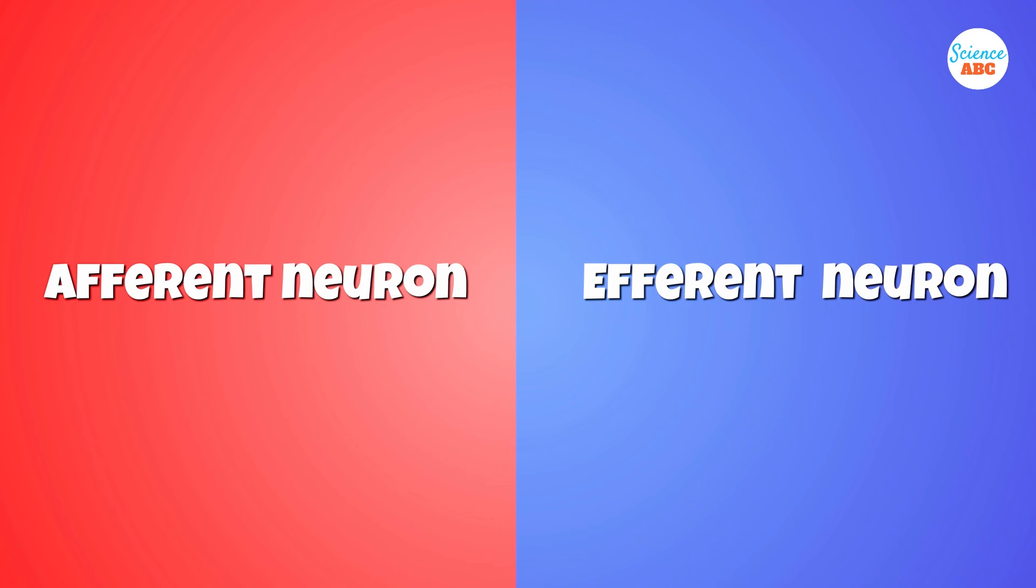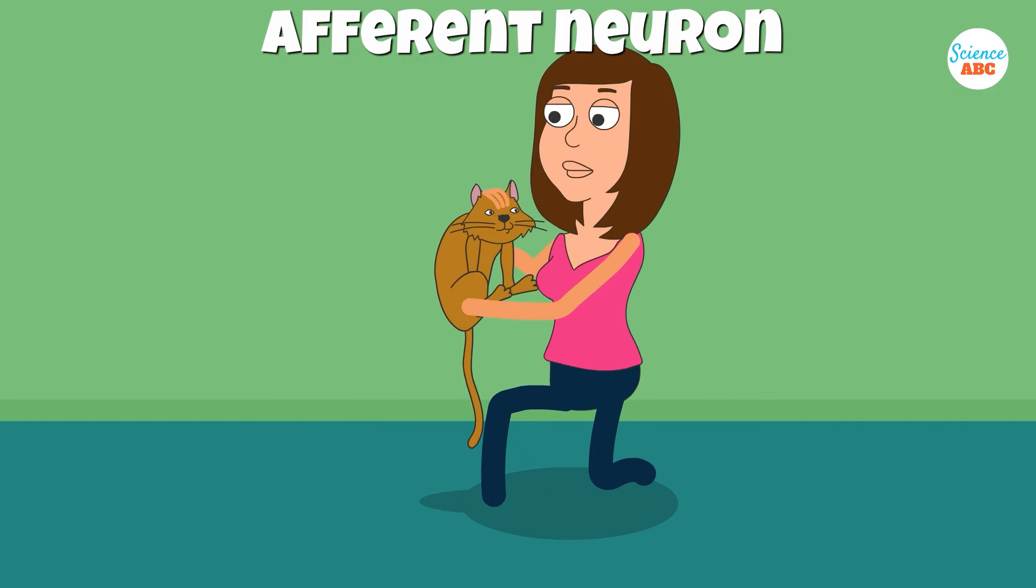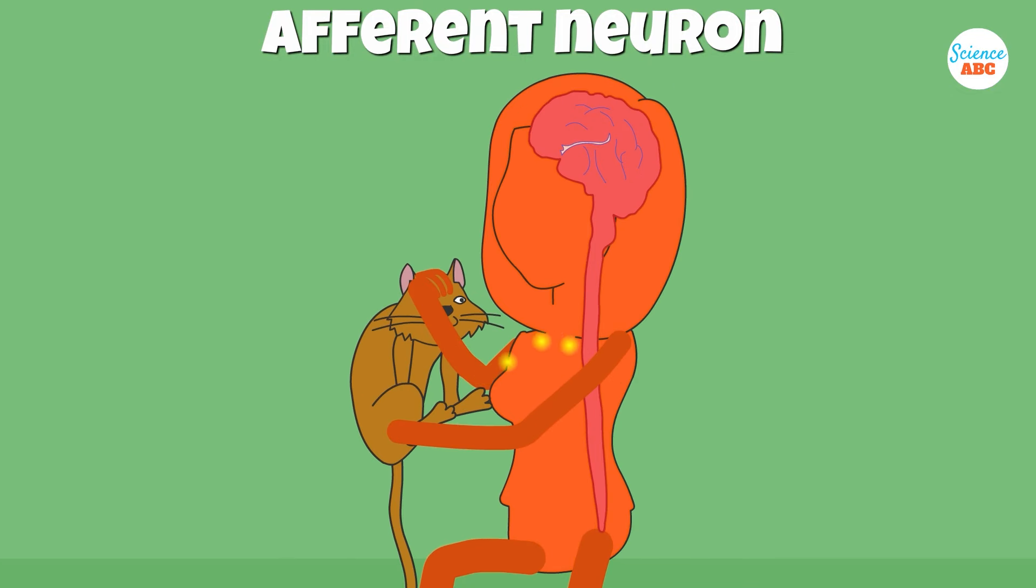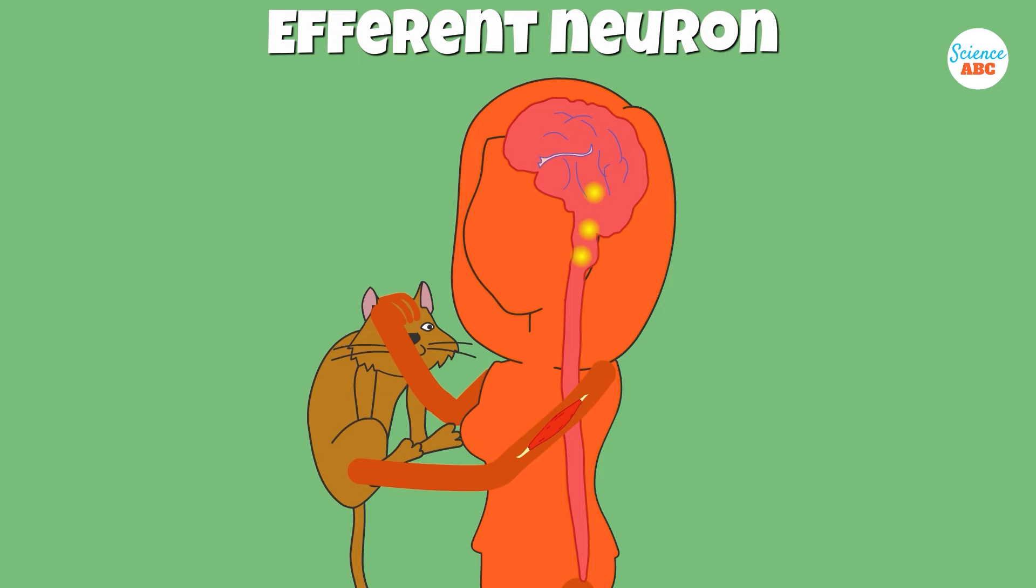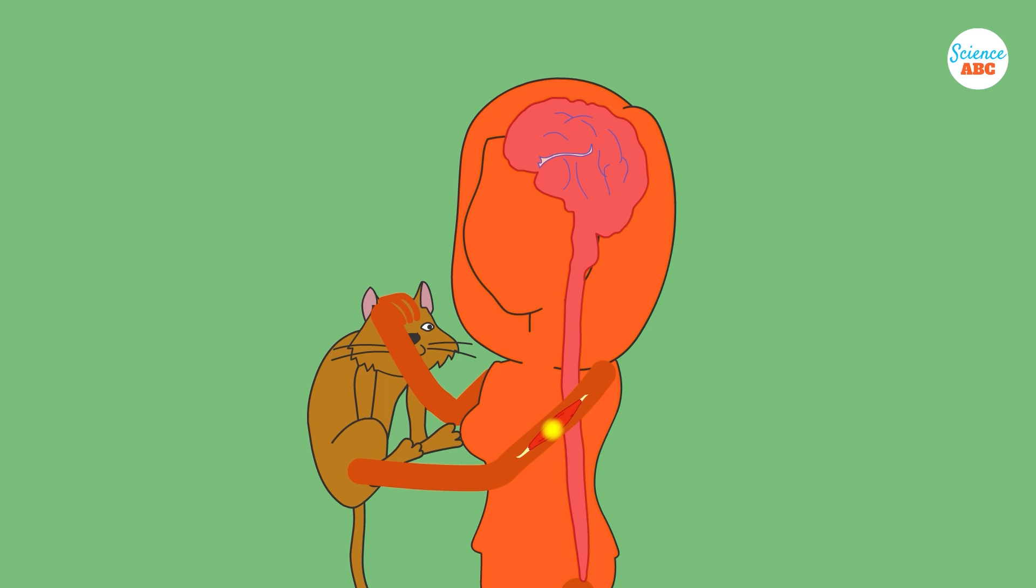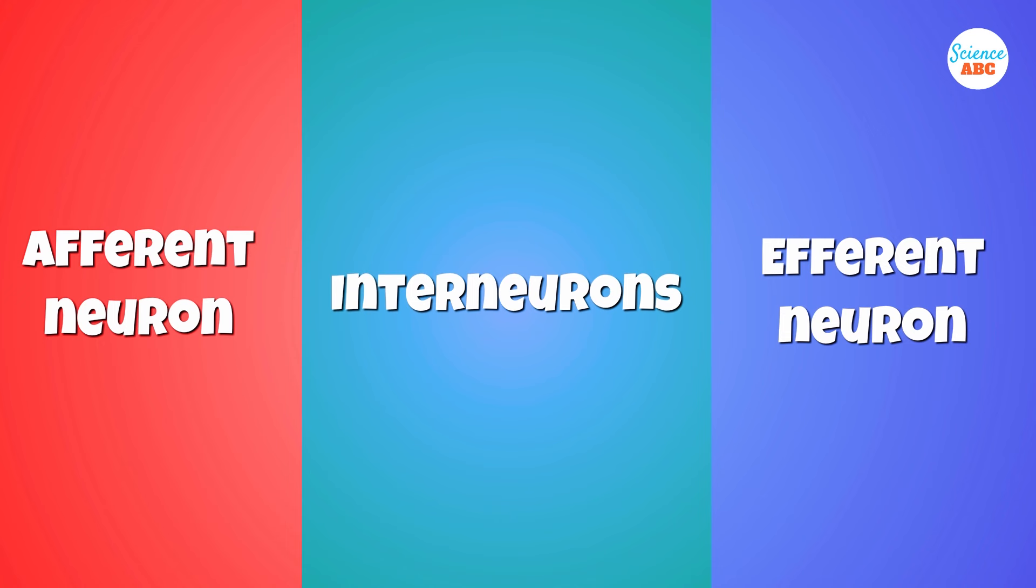There are two types of neurons, afferent and efferent. Afferent neurons receive information and pass it towards the spinal cord and brain. Efferent neurons receive information from neurons in the CNS and pass it away from the CNS to the periphery. There are also interneurons that serve as the in-between of afferent and efferent neurons.